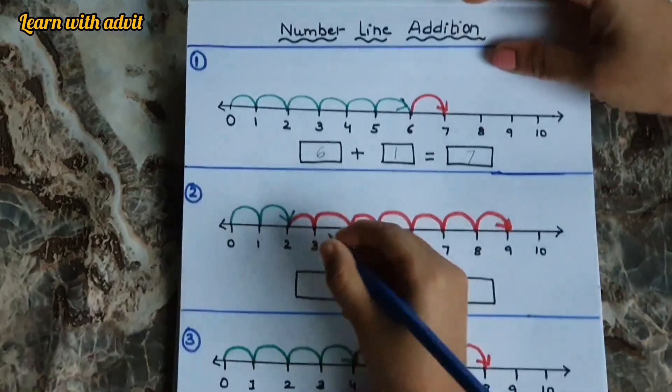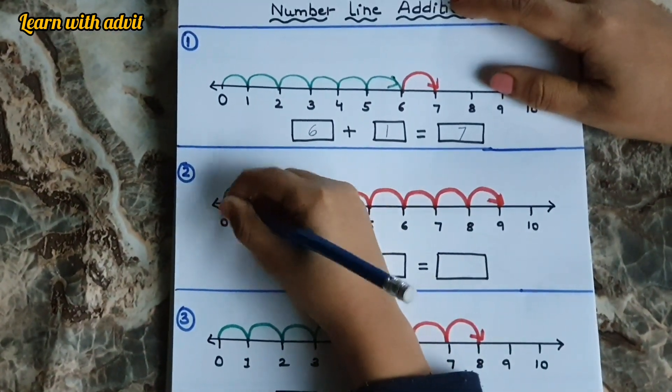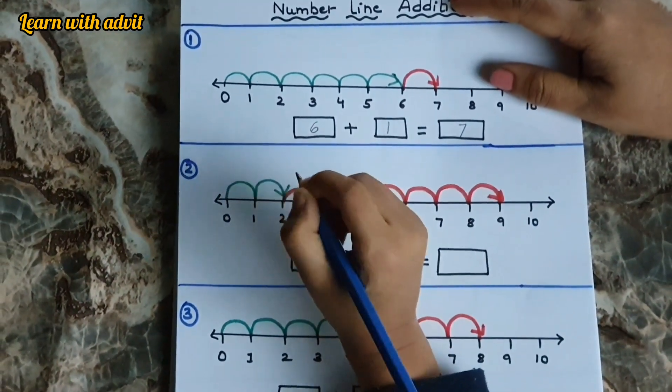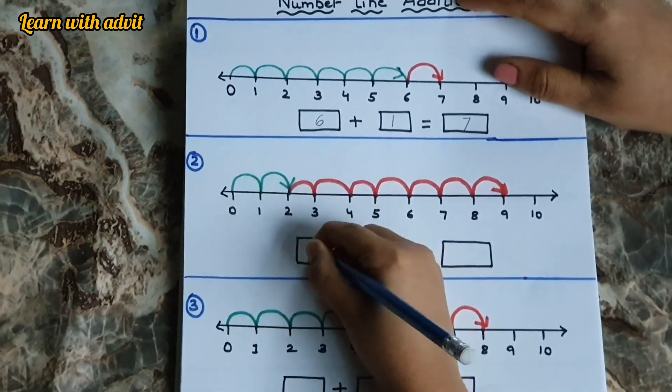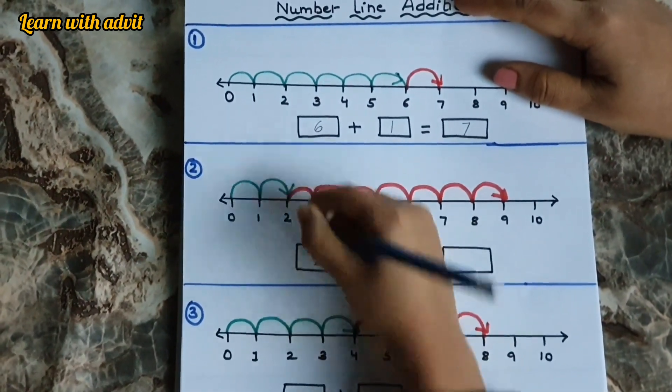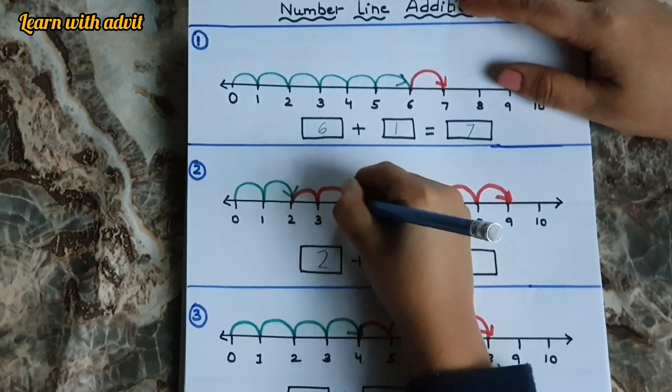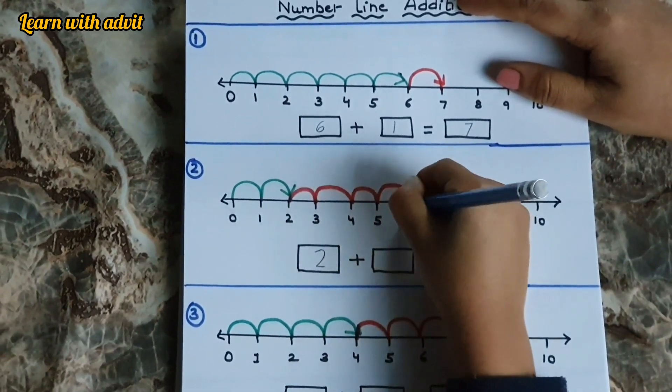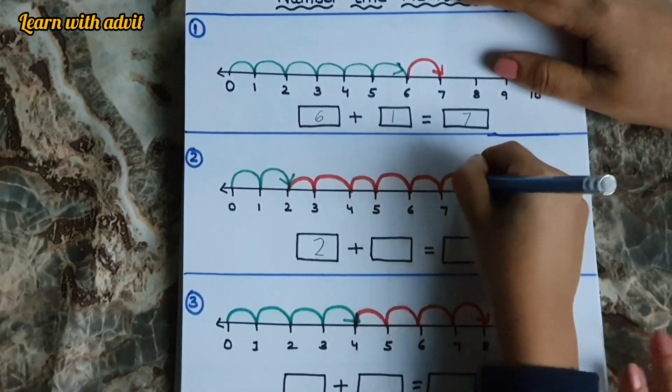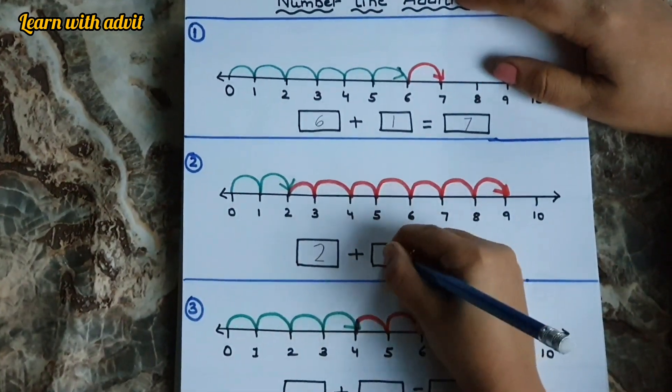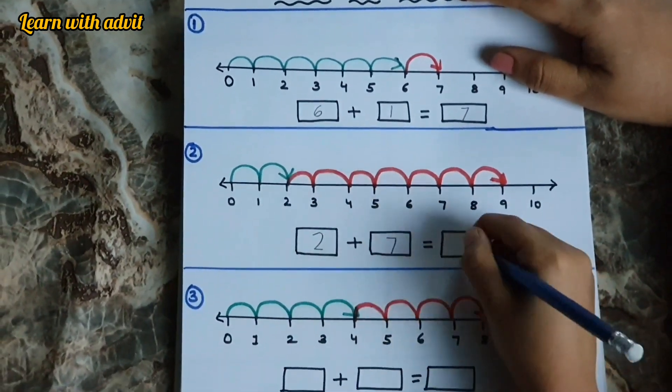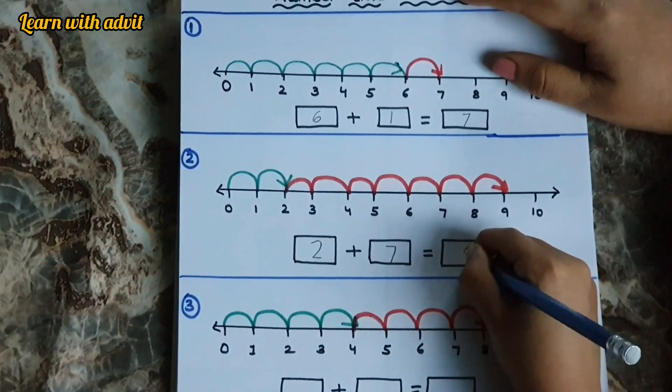Second one. 1, 2. So 2 plus 1, 2, 3, 4, 5, 6, 7. 2 plus 7 equals 9. Good job.